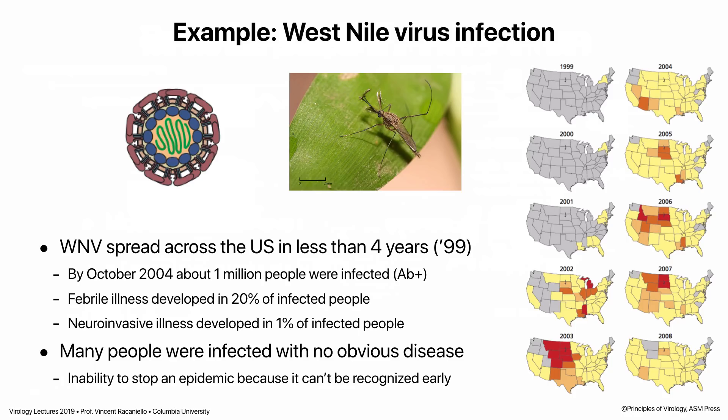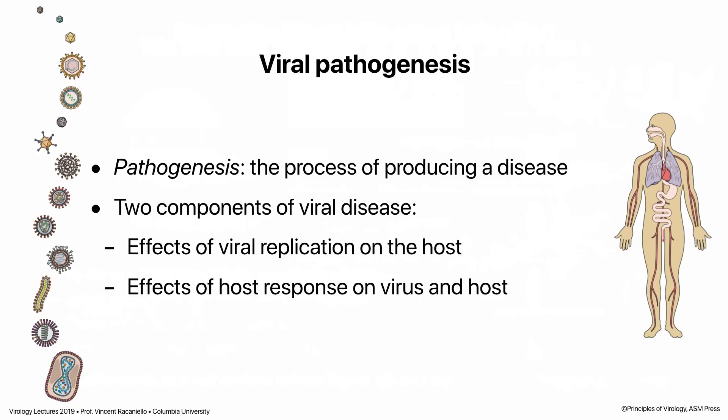Of the 20% who were infected, about 1% get what we call neuroinvasive illness — the virus gets into their brain or spinal cord and causes problems. Many people were infected without having any obvious disease. This has practical consequences because it makes it really hard to stop an epidemic if you can't see where it's spreading. Throughout history, this has been a problem because there are so many inapparently infected people.